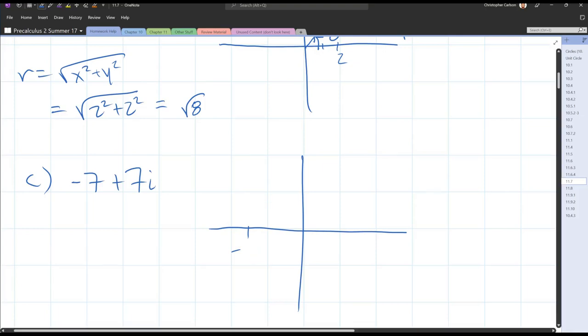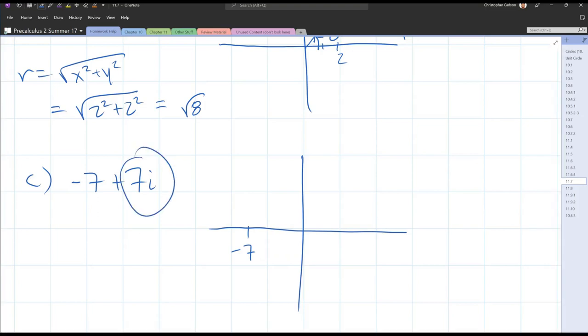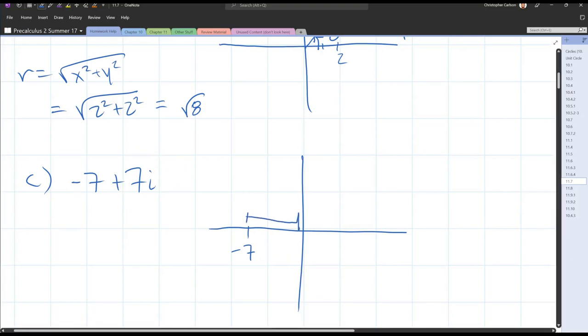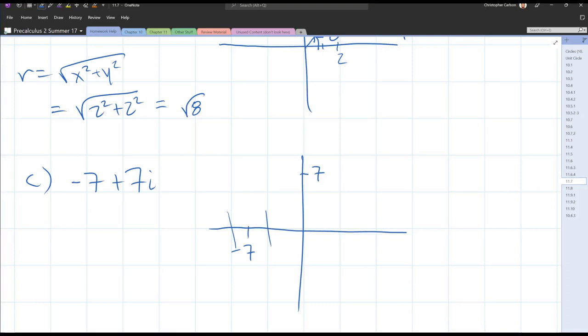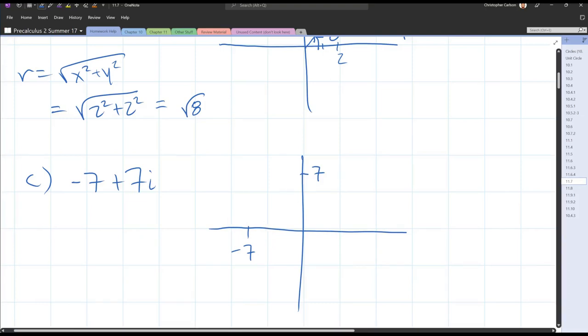If you have smaller graph paper, you could absolutely be accurate. But what I am going to be accurate with: when I go up 7, it needs to be this distance right here. It needs to be the same distance as I went over. I basically went halfway between those two marks, so it would be one and a half boxes. Our point is right here.